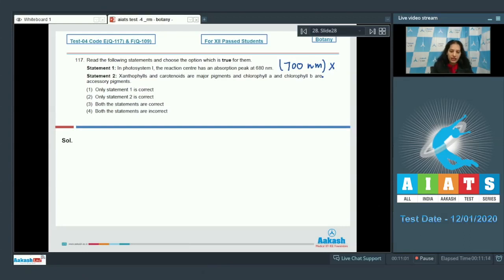Statement 2: Xanthophylls and carotenoids are major pigments and chlorophyll A and chlorophyll B are accessory pigments. Chlorophyll A is the primary photosynthetic pigment in all plants; it cannot be accessory at any time. So this statement is also incorrect. Even xanthophylls and carotenoids are accessory pigments. Both statements are incorrect, so the correct option is option number 4.